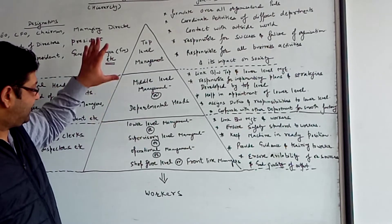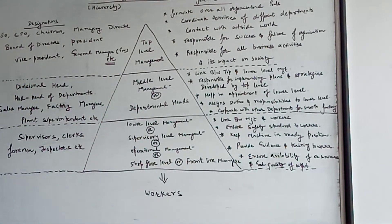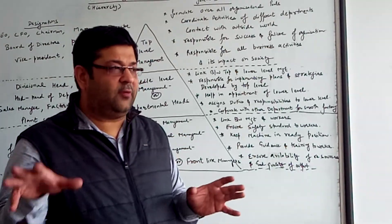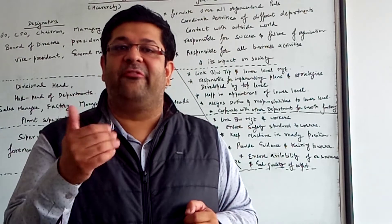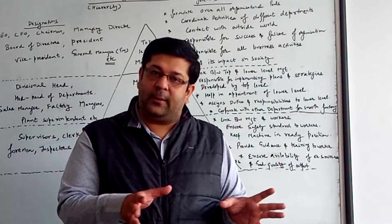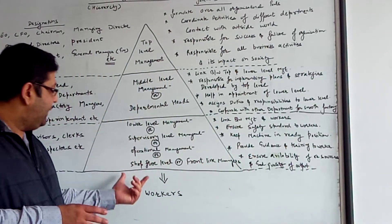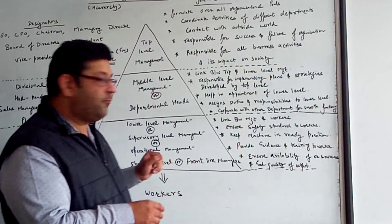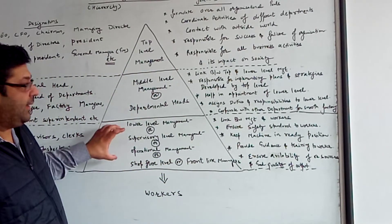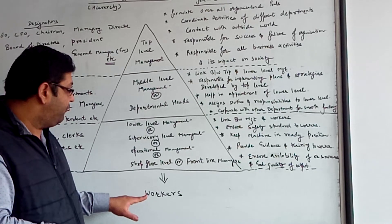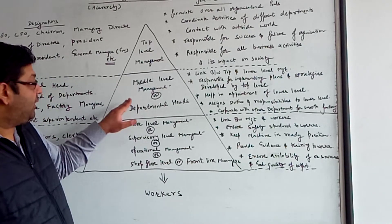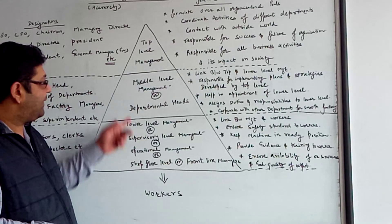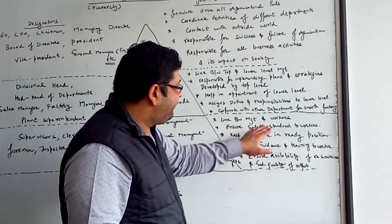The last level in this hierarchy is lower level management, also known as supervisory level management. Supervisory management means overseeing workers — it is about observation over and above. Lower level managers act as a link between workers and middle level managers. They pass the requests and grievances of workers to the middle level, and pass orders framed by top and middle management down to the workers.